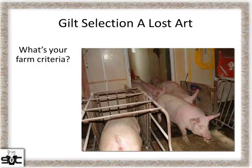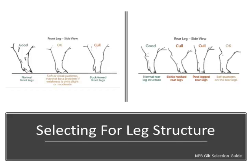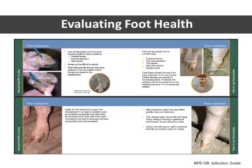The National Pork Board has some really good guides for feet and leg structure and lesions — animals we wouldn't necessarily select to go into the sow farm. I'm not saying we have to pick up every foot and look at it — that'd be ideal but probably not going to happen — but if we can start looking at feet and feet lesions before entering gilts and selectively cull off gilts before they go to the sow farm, we will be better at reducing lameness in the sow herd.